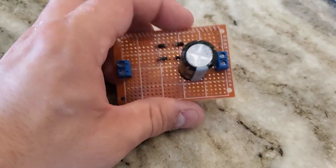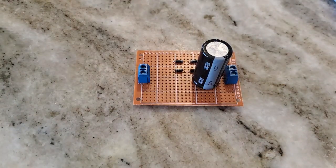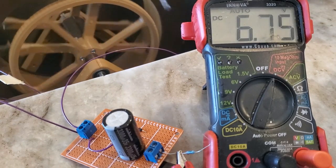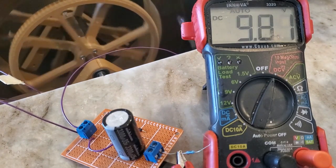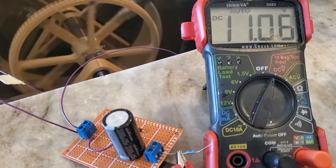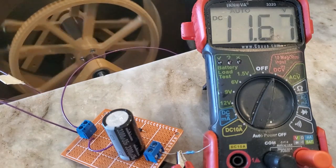Next I built a bridge rectifier with a filter capacitor to convert my output to DC, then ran the water wheel in the sink to see how much I could charge up the cap. 12 volts seems to be the absolute maximum.